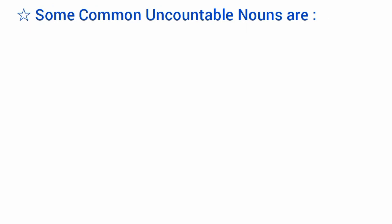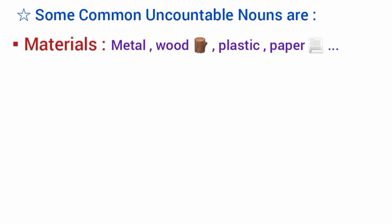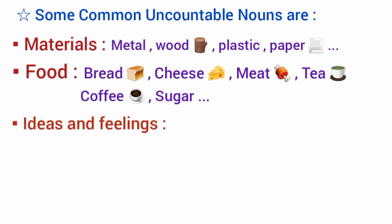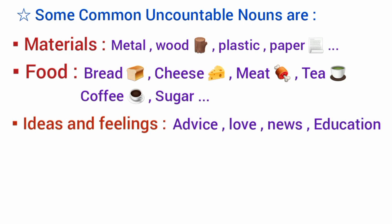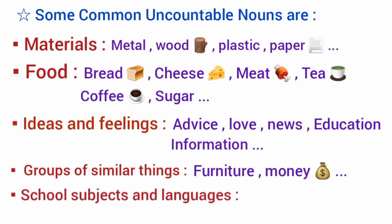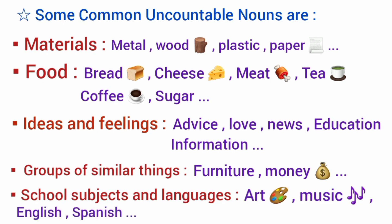Some common uncountable nouns are: materials, for example metal, plastic, paper; food — bread, cheese, meat, tea, coffee, sugar; ideas and feelings — advice, love, news, education, information; groups of similar things — furniture, money; and school subjects and languages — for example art, music, English, Spanish.